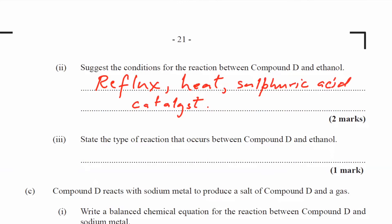State the type of reaction that occurs between compound D and ethanol. So organic acid and alcohols, they react to give us an ester and the process is called esterification.